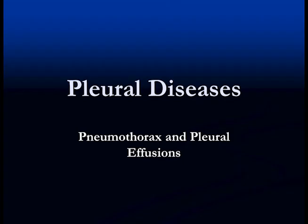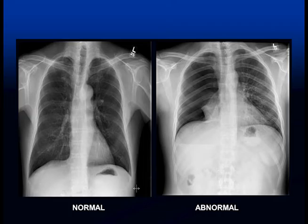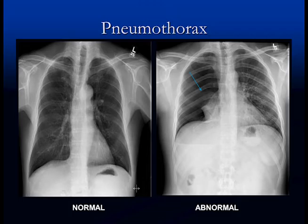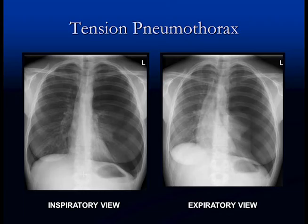Now we're going to talk about pleural disease — pneumothorax and pleural effusions. This is the same patient: a normal chest on the left and after a pneumothorax on the right. The whole lung on the abnormal side is collapsed — this is all air, and the white structure in the middle is the collapsed lung — with an air fluid level at the base. Any time you get a pneumothorax with a little fluid, you get an air fluid level. The left lung is unremarkable with no mediastinal shift, so this is a straightforward pneumothorax.